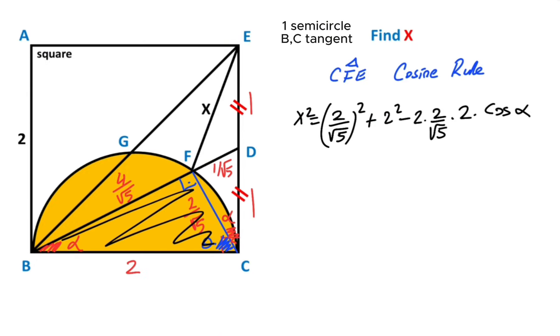Then if you focus on this triangle, for this triangle, if we calculate cos(α), cos(α) = (4/√5)/2, so 2/√5. Therefore, if we plug in this triangle to the equation instead of cos(α), 2/√5.